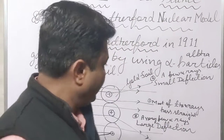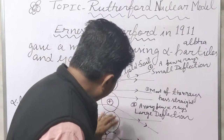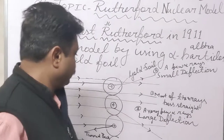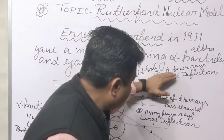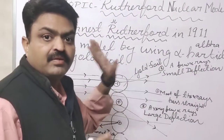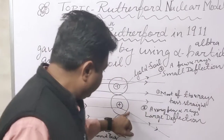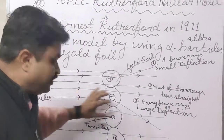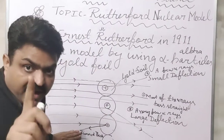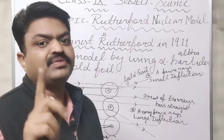When alpha particle rays are fired on the gold foil, most of the rays pass straight. Some rays pass with small deflections, some are deflected with a large angle, and some are turned back. With the help of those turned-back rays, he discovered the nucleus of the atom.